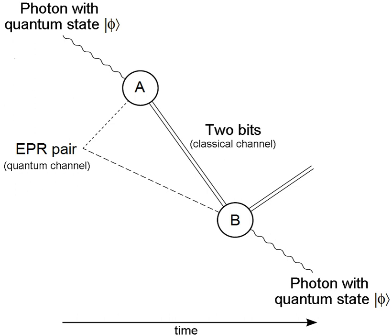Another possible platform are quantum processors based on ion traps, which utilize radiofrequency magnetic fields and lasers. In a multispecies trapped ion node network, photons entangled with a parent atom are used to entangle different nodes. Also, cavity quantum electrodynamics (cavity QED) is one possible method. In cavity QED, photonic quantum states can be transferred to and from atomic quantum states stored in single atoms contained in optical cavities. This allows for the transfer of quantum states between single atoms using optical fiber, in addition to the creation of remote entanglement between distant atoms.